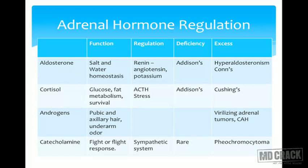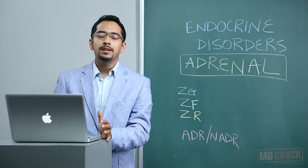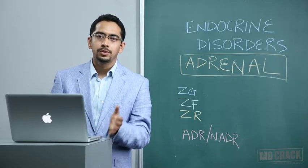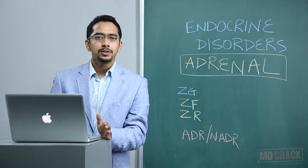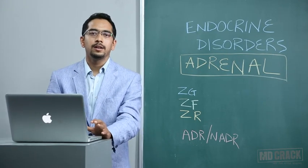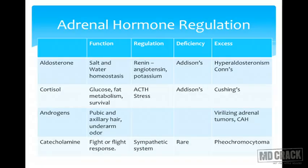Aldosterone regulates salt and water in your blood. Its deficiency causes Addison's disease and excess is called hyperaldosteronism. If it is due to a single unilateral adenoma, it is called Conn's syndrome. Cortisol's function is survival, glucose and fat metabolism, and immune regulation. It is under direct control of ACTH, meaning it comes under pituitary control — unlike aldosterone which is not under pituitary control. In Addison's you have deficiency of both aldosterone and cortisol.